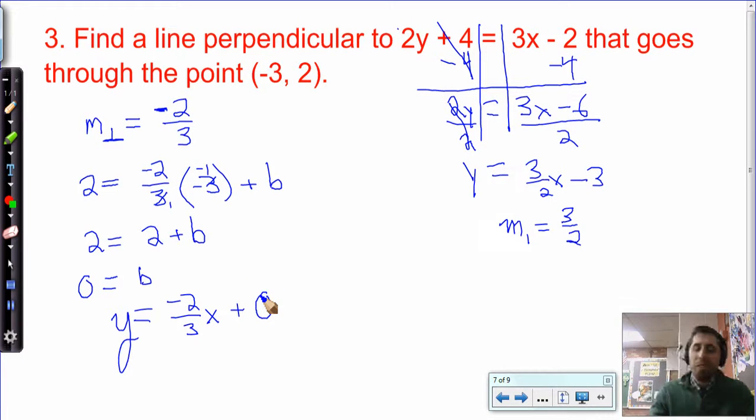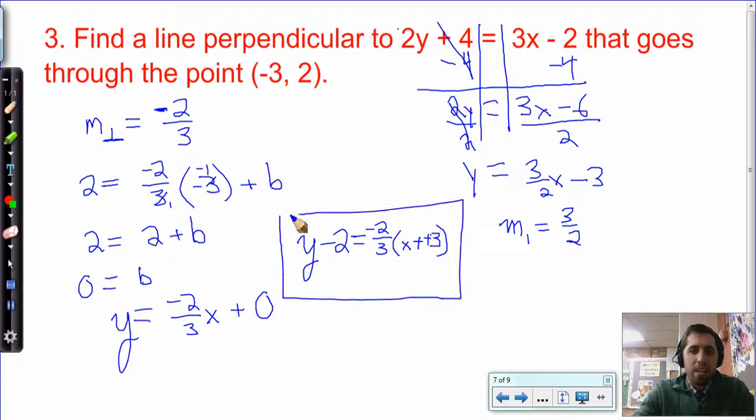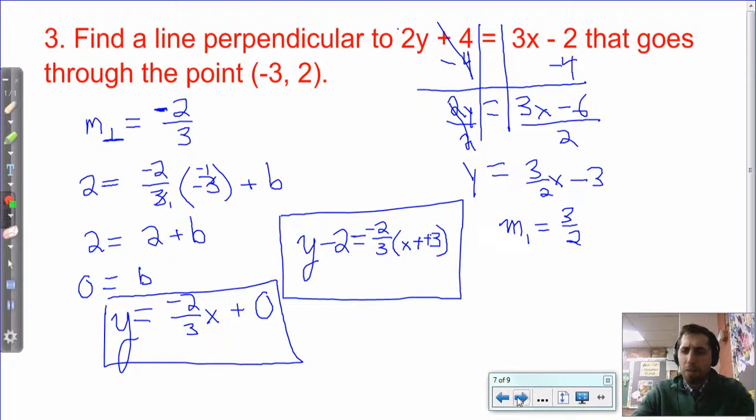Something else you could have done is you could have just put it right into point-slope form. So y minus y1. What's y1? 2 equals m. The perpendicular slope is negative 2/3 times the quantity of x minus x1. What's x1? Negative 3. So minus a negative 3 is the same as adding a positive. Or y plus 3. So this would be fine. This would be the equation of the line that meets that criteria. That'd be it in point-slope form. This is it in y-intercept form. Those are the two versions of the same line. Pretty interesting. Pretty good. Hopefully it made sense. Re-watch any parts that don't.